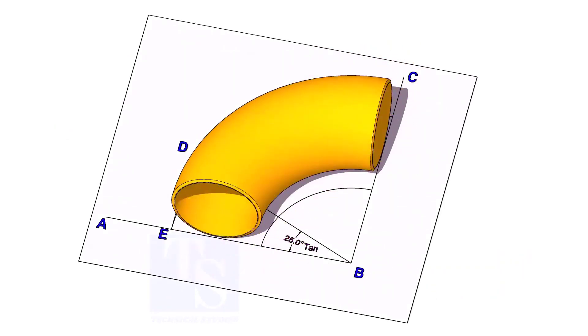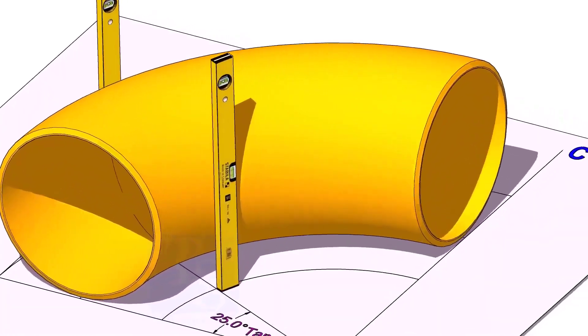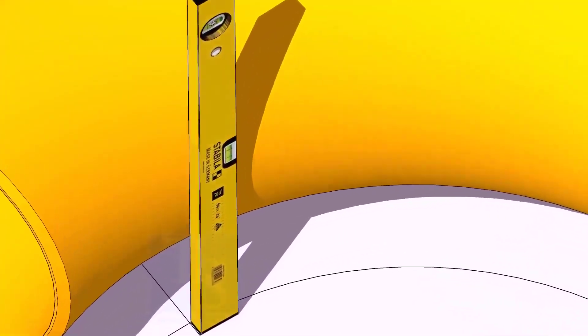Hold two large level bottles at the edge of the elbow on both sides vertically, and strike a mark where the level bottle edge touches the elbow.